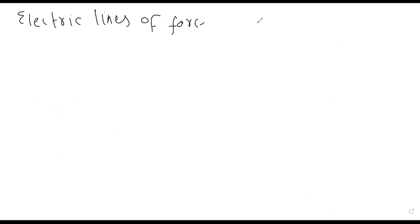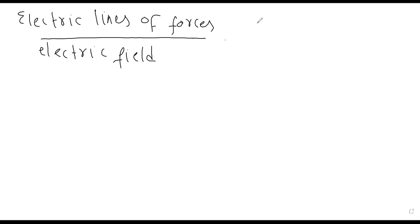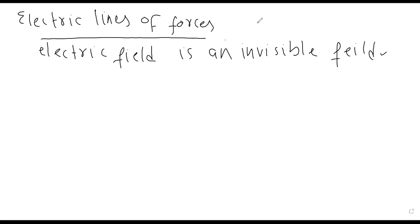Electric lines of forces ke baare mein simple concept hai — isko easy karke samjhenge. Dear viewers, jab hum electric field ki baat karte hain to electric field ko samajhne ke liye 3 most important concepts hote hain. Kyun? Kyunki jo electric field hoti hai, woh ek aisi field hoti hai jise hum dekh nahin sakte — electric field is an invisible field. Ab ek aisi field jise hum dekh na saken, uski production hum kis tarike ke saath kar sakte hain?